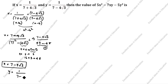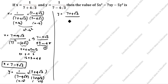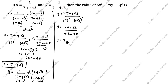Next we will find y. y is equal to 1 divided by 7 minus 4 root 3. Here the denominator has minus, so we rationalize by multiplying by 7 plus 4 root 3 divided by 7 plus 4 root 3. This is a minus b times a plus b, giving a square minus b square: 49 minus 48 equals 1. So y is equal to 7 plus 4 root 3.